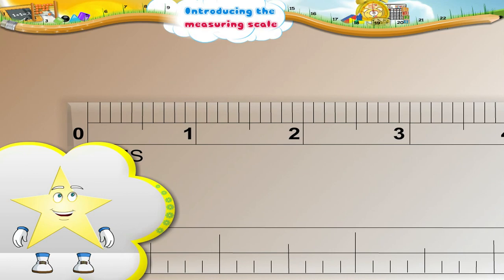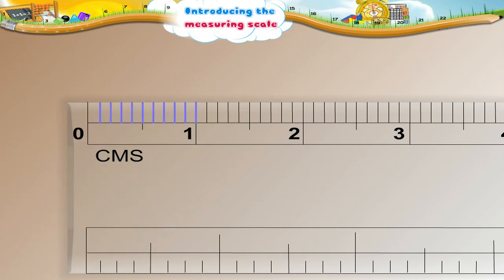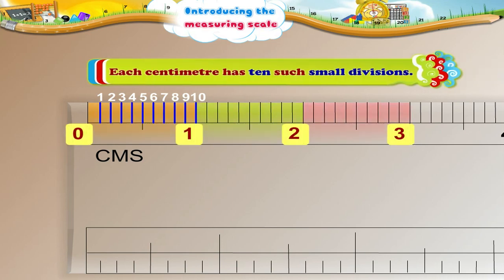Starry, look closely. Do you see something else? Right! There are smaller markings within each centimeter. Let us count these small markings: 1, 2, 3, 4, 5, 6, 7, 8, 9, 10. Thus, each centimeter has 10 such small divisions.